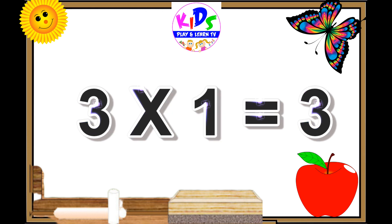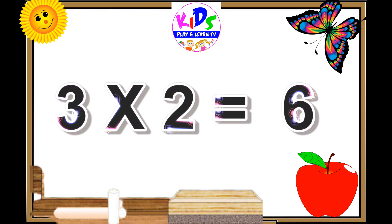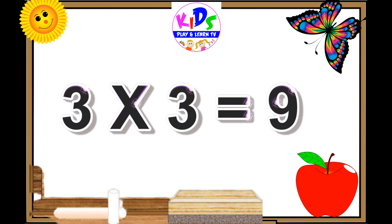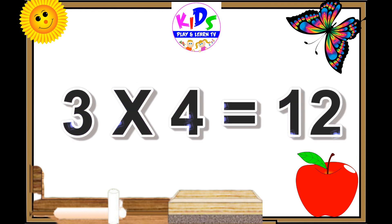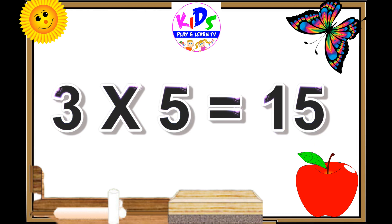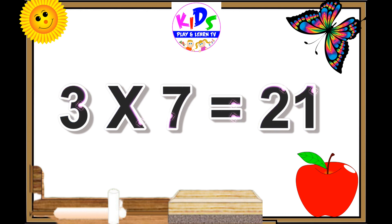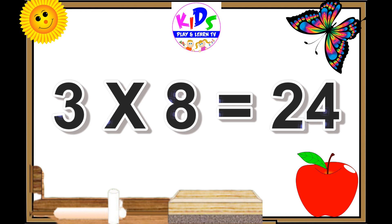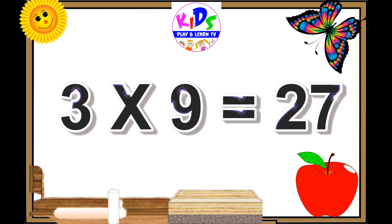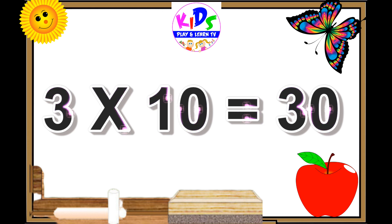Three ones are three. Three twos are six. Three threes are nine. Three fours are twelve. Three fives are fifteen. Three sixes are eighteen. Three sevens are twenty-one. Three eights are twenty-four. Three nines are twenty-seven. Three tens are thirty.